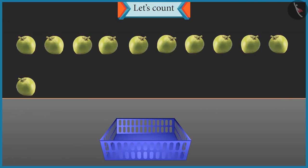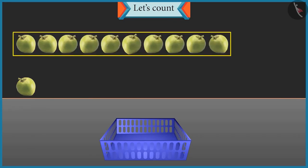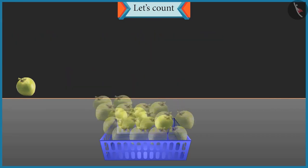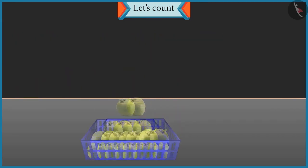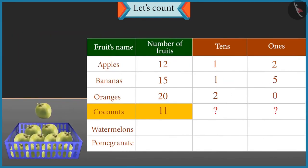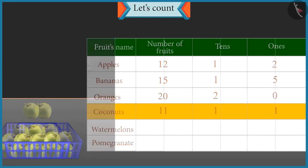So how many groups of ten coconuts are there? And how many single coconuts are left? There is one group of ten coconuts and one single coconut left. So it will be one ten and one ones in eleven. Absolutely right.